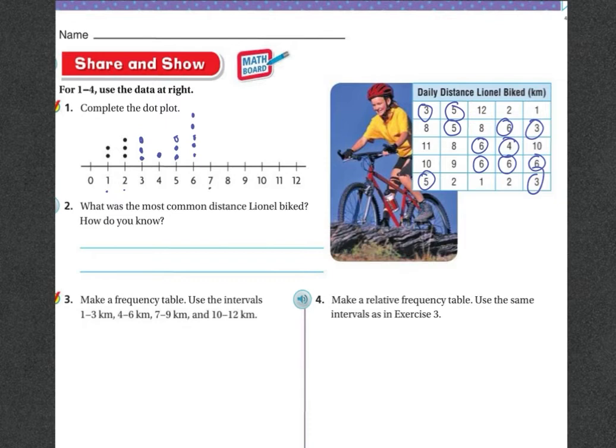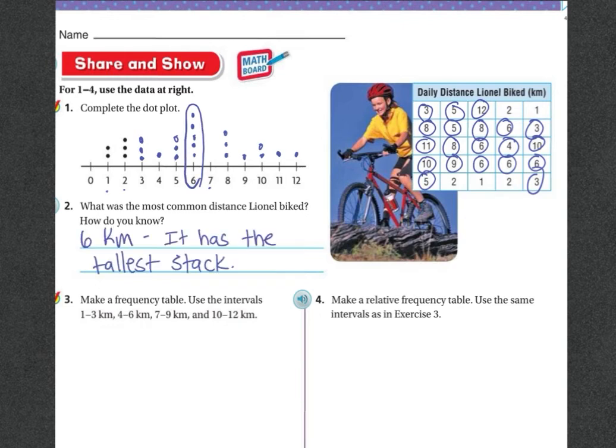Now I'm looking for the 7's. So I'm looking for the 7's, and I don't see any 7's. So now I'm looking for 8's. 1, 2, 3. So 1, 2, 3. So he biked 3 times he biked 8 kilometers. Now I'm looking for the 9's, and I see 1 9. Now I'm looking for the 10's, and I see 1, 2 10's. Now I'm looking for the 11's, and I see 1 11. Alright, so what was the most common distance that Lionel biked, and how do you know? Well, it's right here. It's going to be 6 kilometers. And I know that because it has the tallest stack.